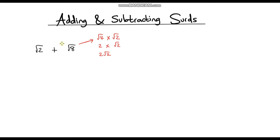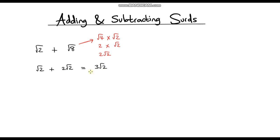Now we've simplified root 8, I'm going to rewrite the expression. We've got root 2 plus, and instead of writing root 8, I write 2 root 2. Notice we now have 1 root 2 plus 2 root 2s. Just think about algebra: if we have 1 of something and we add 2 of that something, we have 3 of that something. In this case that something is root 2, so our final answer is 3 root 2.